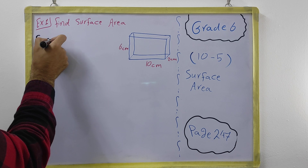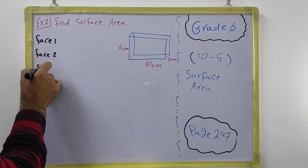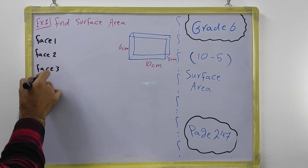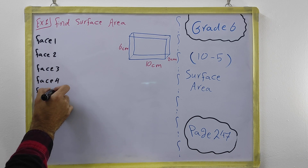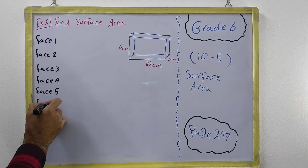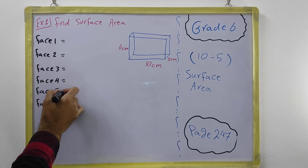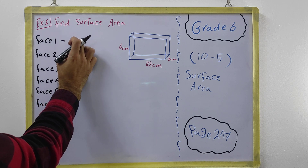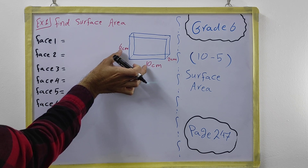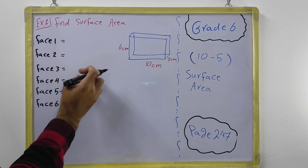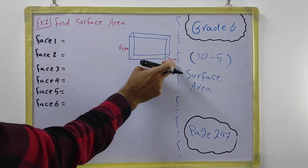You find face one, face two, face three, and face four — all six faces — and you have to find the area of all of them. At the end you add them all. For the first two faces we use two of the numbers; for faces three and four we use another two; and for faces five and six we use the remaining two.